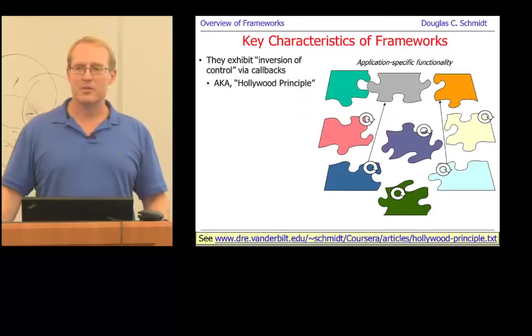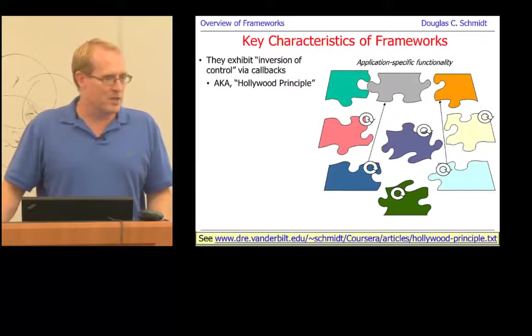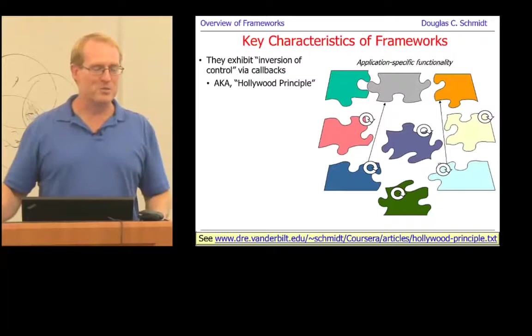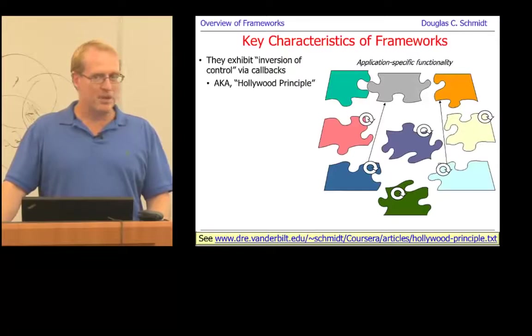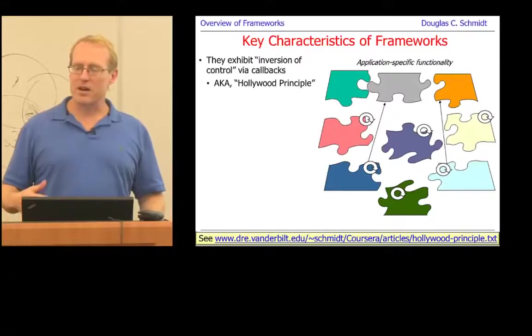The inversion of control means you don't own the event loop — the framework owns it and calls you back when something happens. This is quite distinct from what some of you may have experienced: if you've mostly spent time programming in CS 101, 201, or even 251, a lot of those apps are self-directed — the application itself owns the event loop and decides what's going to happen next. That's not what a framework is about. In the framework environment, the framework owns the event loop and decides what's going to happen.